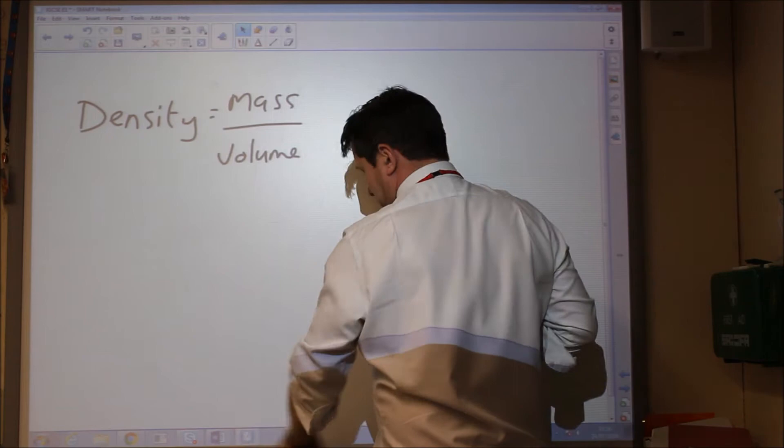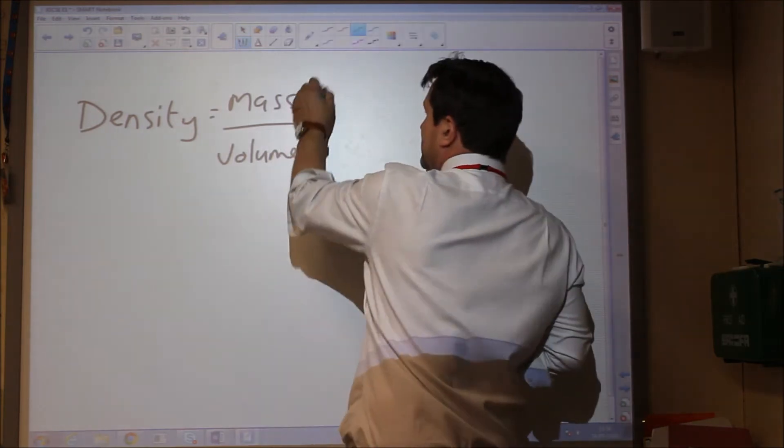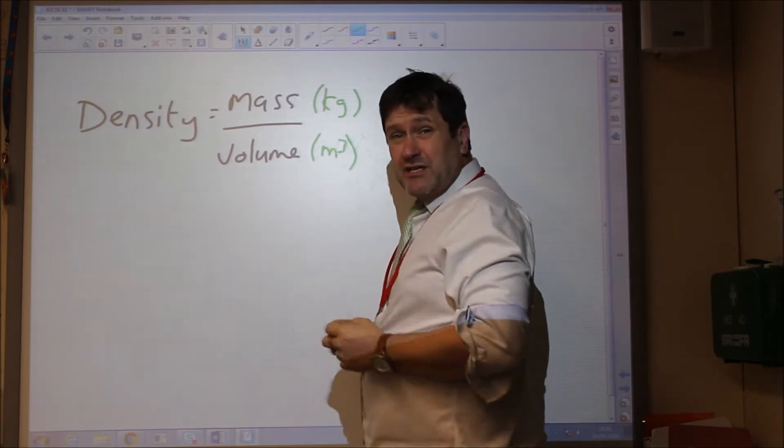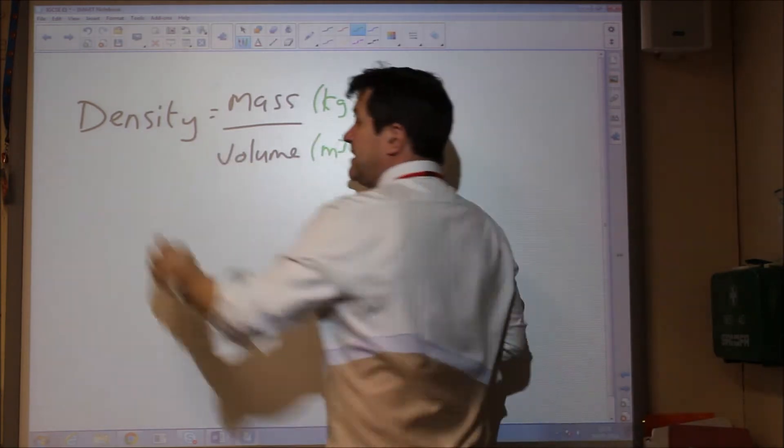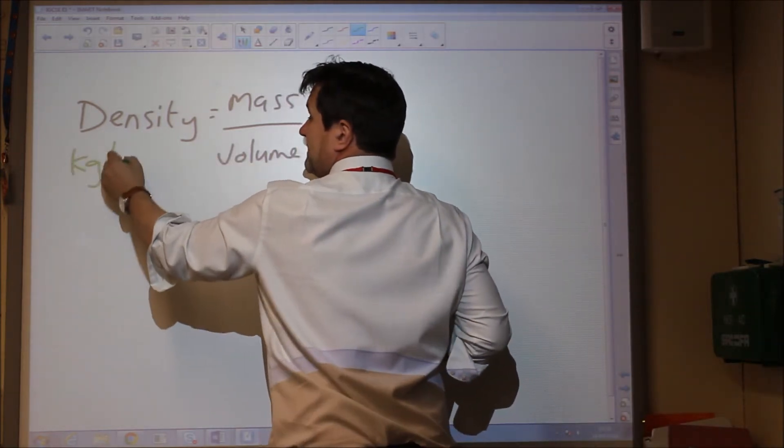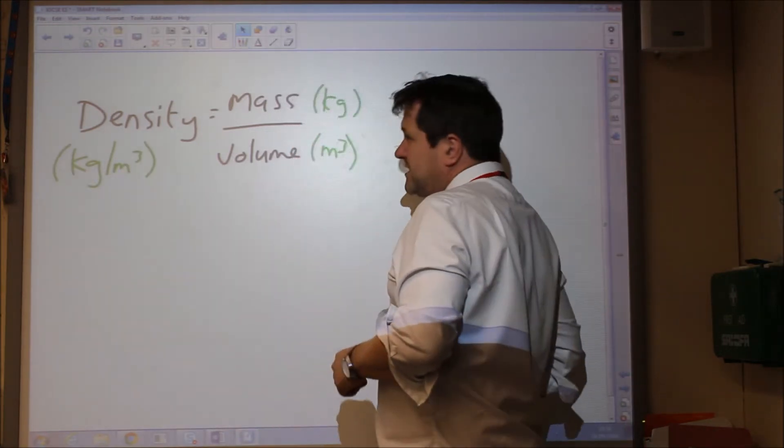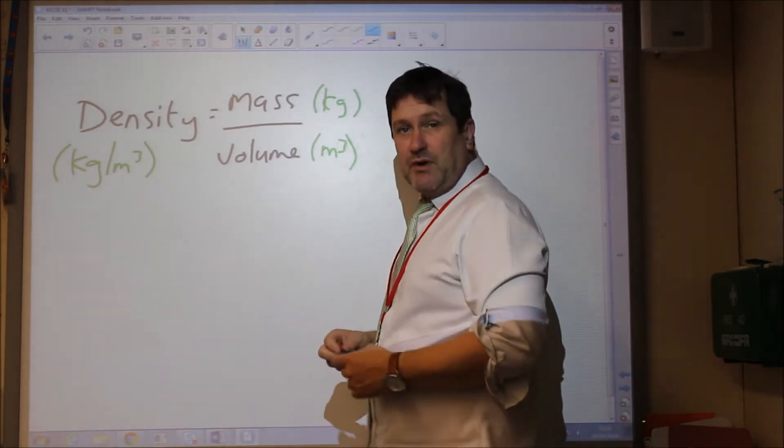Now then, we should all remember that mass is measured in kilograms and volume is measured in metres cubed. So therefore the units for density should be kilograms per metre cubed. Now, density can start off as quite a straightforward problem.